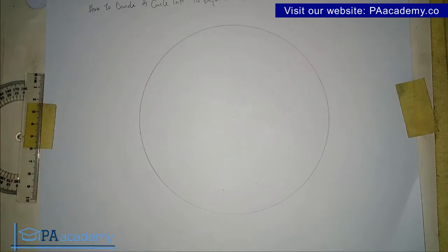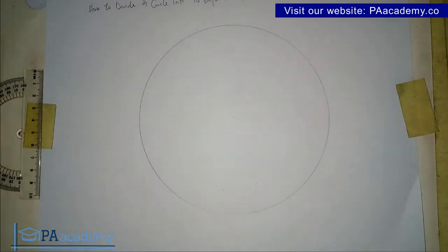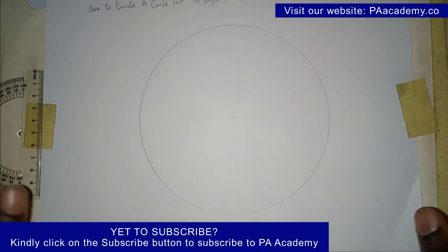Now let's get into this video: how do you divide a circle into 10 equal parts? The first thing you need is your circle. It's important to note that irrespective of the radius of your circle or how big or small it is, the steps are still the same.